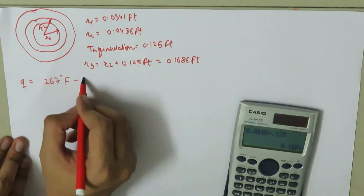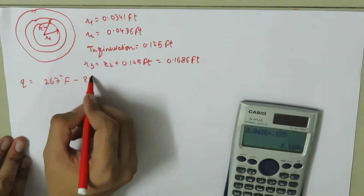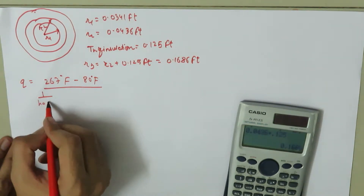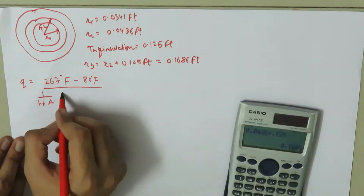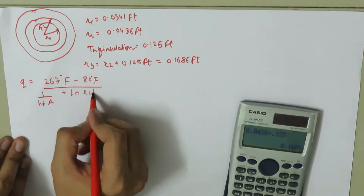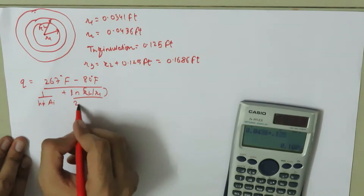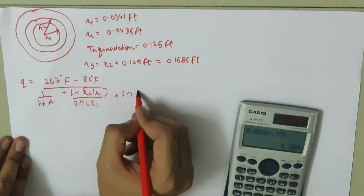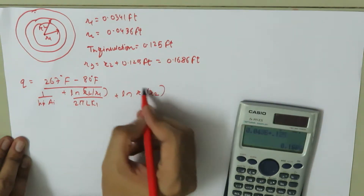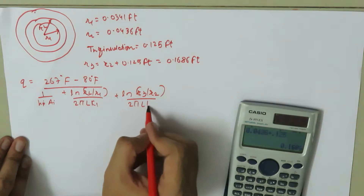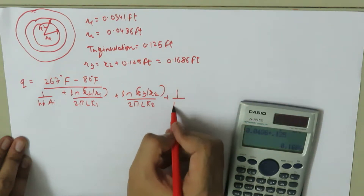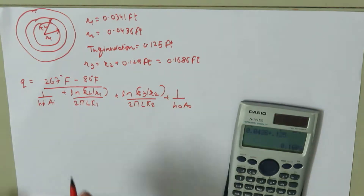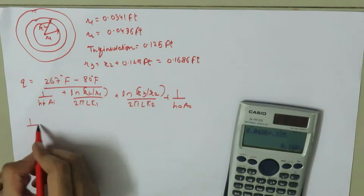We know Q equals (inside temperature 267°F minus outside temperature 80°F) divided by the sum of resistances: 1/(hi·Ai) + ln(r2/r1)/(2π·L·k1) + ln(r3/r2)/(2π·L·k2) + 1/(ho·Ao). We will now calculate each resistance term.